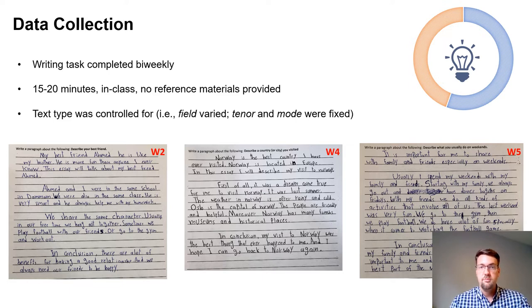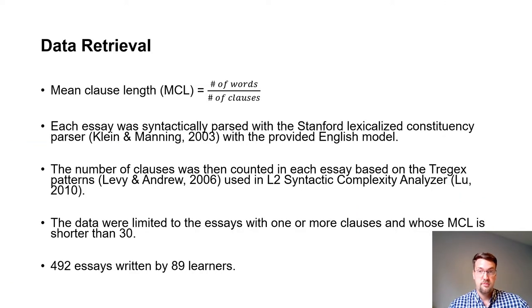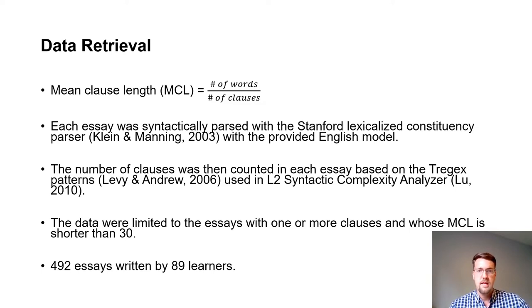Task type was controlled for: we provided a writing prompt where the field of writing was varied, but the tenor and mode of writing were fixed across all seven waves. In our dataset we had multiple variables, but for this study we examined the development of mean clause length, calculated by dividing the number of words in a text by the number of clauses. Mean clause length was selected because it's a common measure used in L2 linguistic complexity research. Each text was syntactically parsed with the Stanford lexicalized constituency parser, and the number of clauses was counted based on the tregex patterns used in the L2 syntactic complexity analyzer.